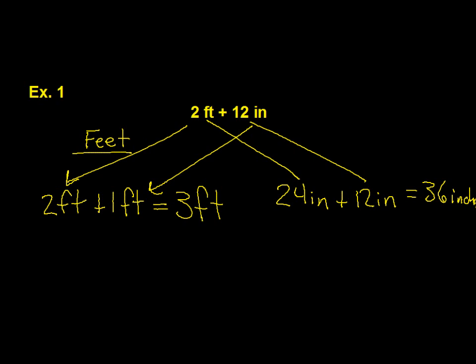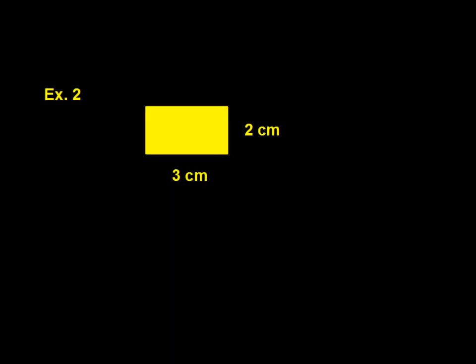Example number 2. In example number 2, we're going to figure out the area of the shape. The first thing we have to realize is that this shape is a 2 by 3 figure. So essentially, we're multiplying 2 times 3.